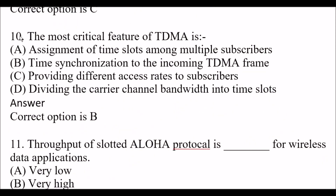Next question: The most critical feature of TDMA is — Option A: assignment of time slots among multiple subscribers. Option B: time synchronization to the incoming TDMA frame. Option C: providing different access rates to subscribers. Option D: dividing the carrier channel's bandwidth into time slots. The right answer is Option B, time synchronization to the incoming TDMA frame.